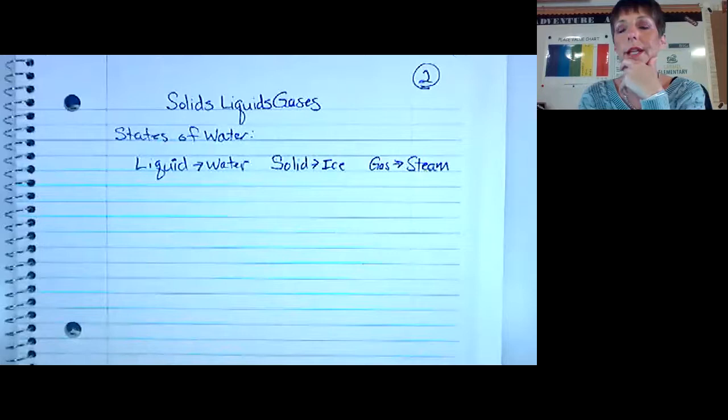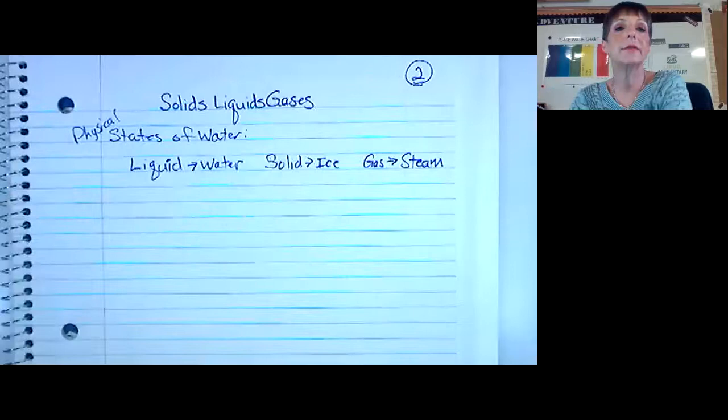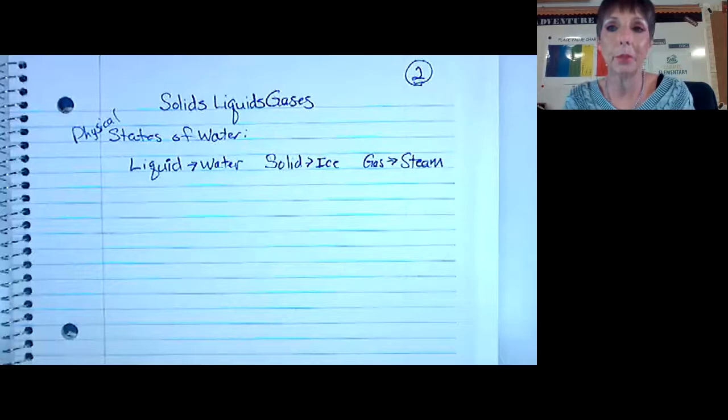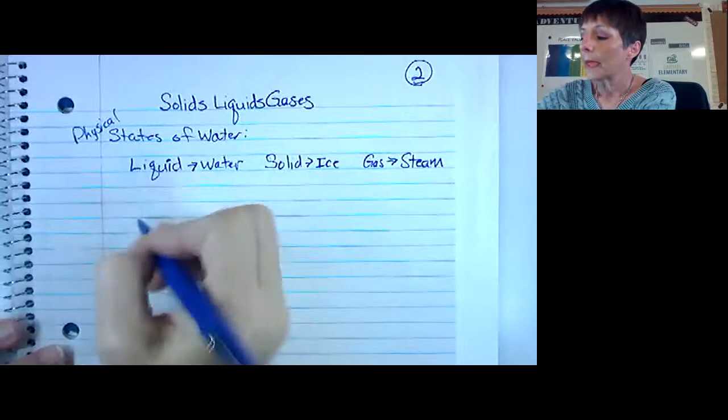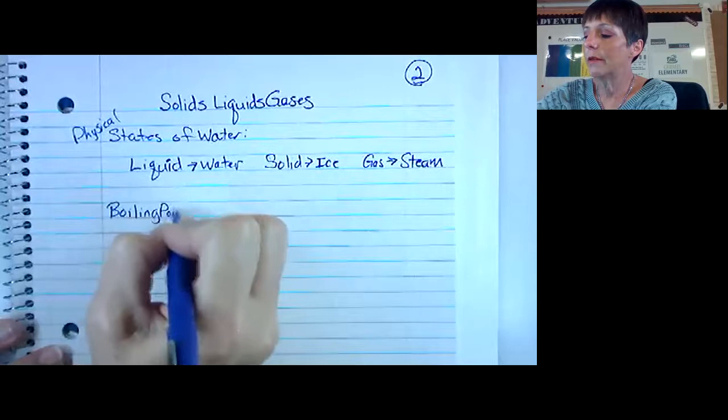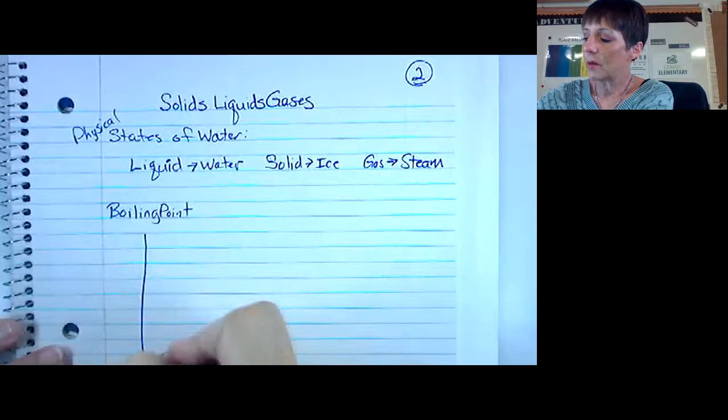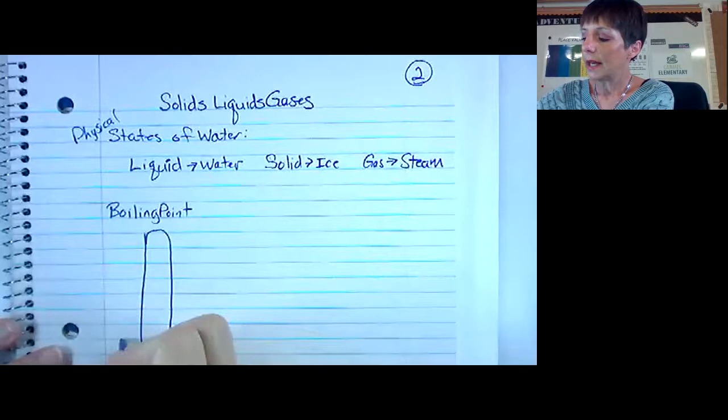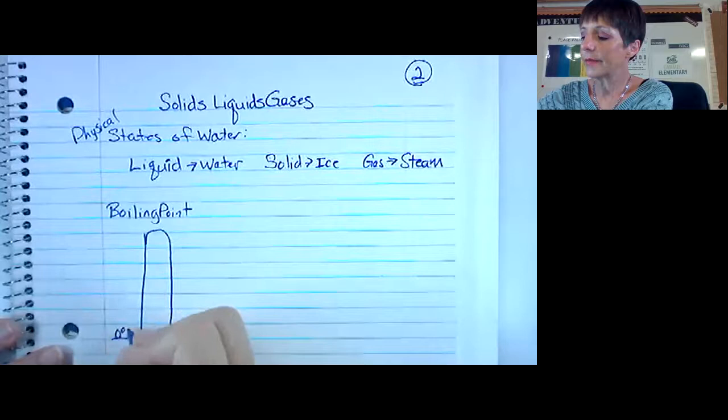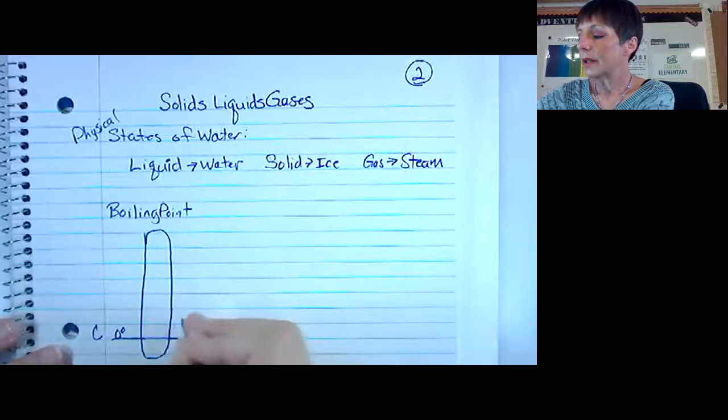Our next lesson was to learn about what happens whenever I add temperature to these physical states. We learned that the boiling point for water, and if I draw a little thermometer you can draw one of these if you want, we'll come down here and we'll make this zero degrees Celsius and we'll make this one zero degrees Fahrenheit.